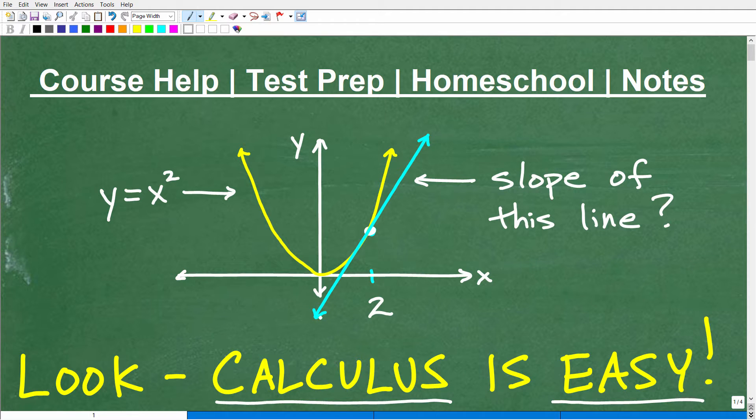So let's take a look at this problem here. We have this yellow curve, described as y equals x squared. That's a parabola. Then we have this blue line. This blue line is something called a tangent line.